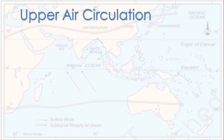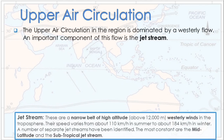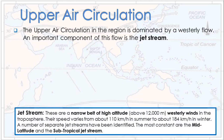The upper air circulation in the region is dominated by a westerly flow. An important component of this flow is the jet stream. Jet streams are a narrow band of high altitude winds above 12,000 meters.